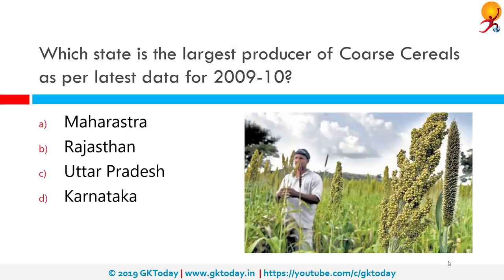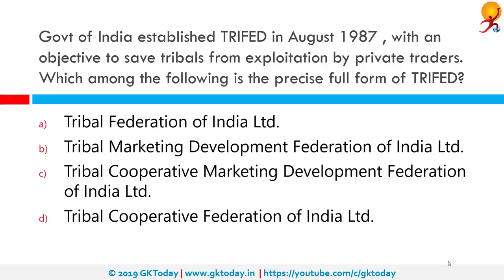Which state is the largest producer of coarse cereals as per 2009-10 data? The correct answer is Maharashtra, which produced 6.29 million tons of coarse cereals in 2009-10, followed by Karnataka, Rajasthan, Andhra Pradesh, then Uttar Pradesh, then Madhya Pradesh and so on.